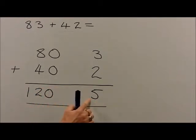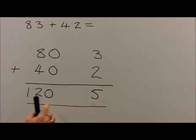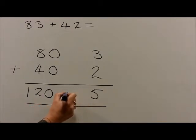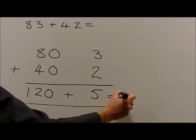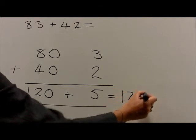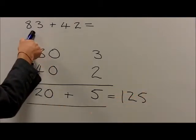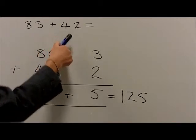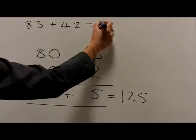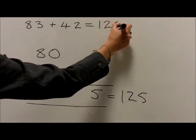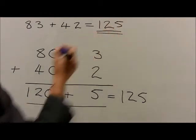These two numbers are then added back together, so that 120 plus 5 is equal to 125. Therefore, 83 plus 42 is equal to 125, is our final answer.